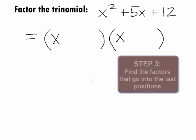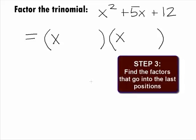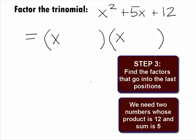In Step 3, we want to find the factors that go in the last positions. Because it is the reverse of the FOIL method, this means we are looking for 2 terms whose product is 12 and sum is 5.